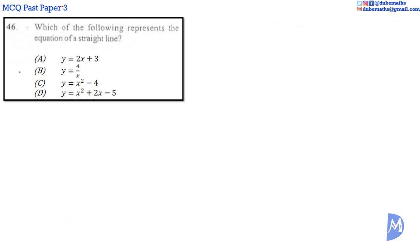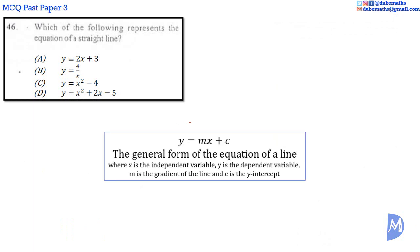Question 46. The general form of the equation of a line is y equals mx plus c. We see that the powers of the variables y and x is 1. Whenever we see y or x, the power is 1. This rules out c and d.